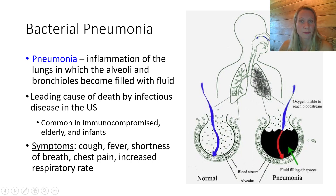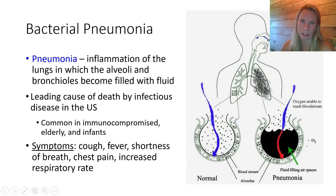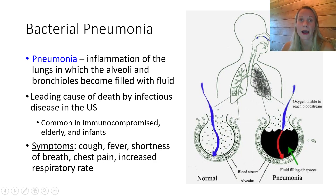At-risk groups include the immunocompromised, elderly, and infants. Common symptoms are shortness of breath, cough, fever, chest pain, and increased respiratory rate — signs shared with viral pneumonia. Bacterial pneumonia generally has a more rapid onset of symptoms compared to viral pneumonia, which has a longer incubation time. Bacterial pneumonia can have a very fast incubation because bacteria reproduce exponentially.